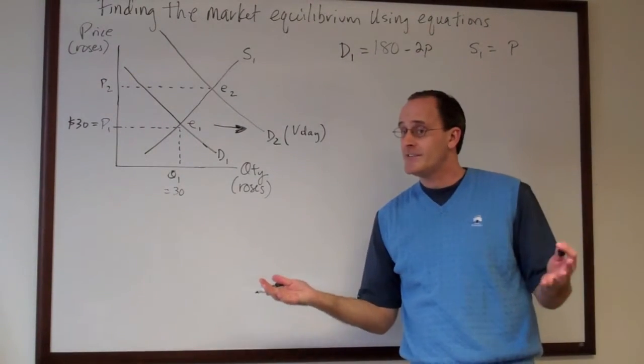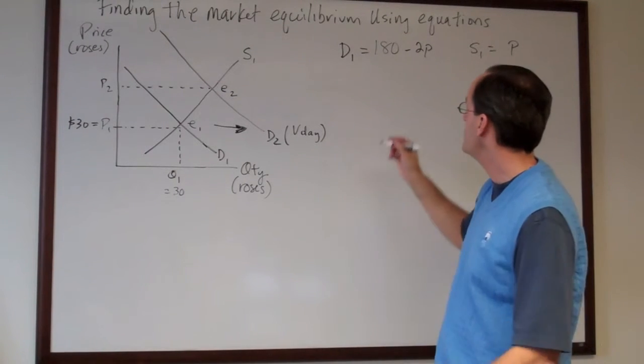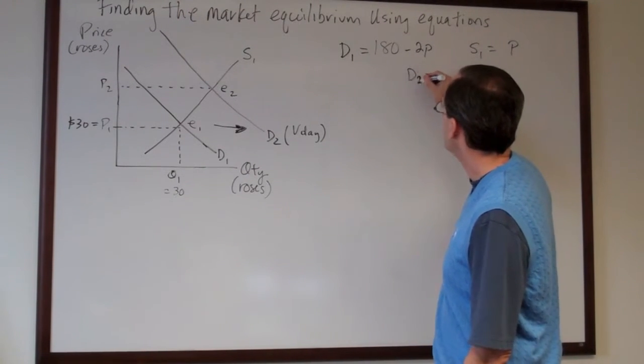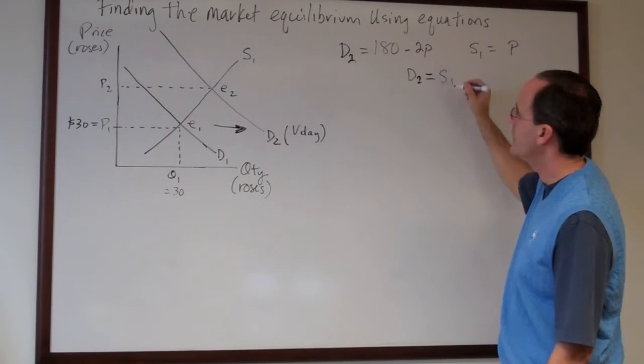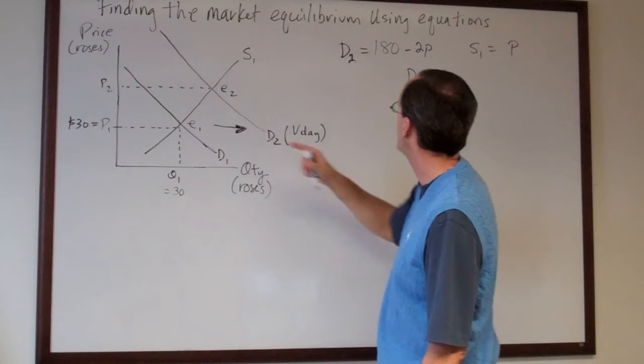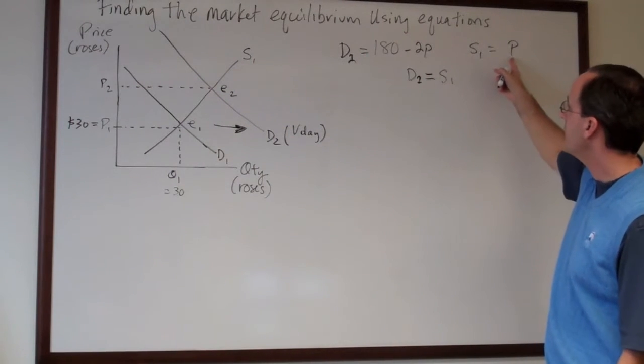The process is exactly the same. So let's go through this again. We want to find out where d2 is now equal to s1. We didn't shift the supply curve so we'll use the same equation.